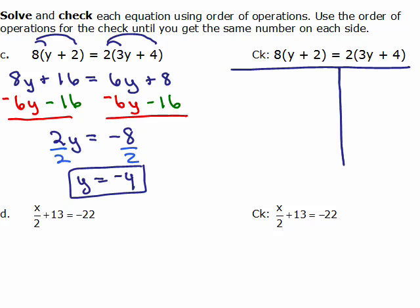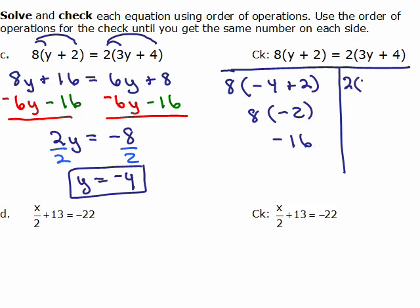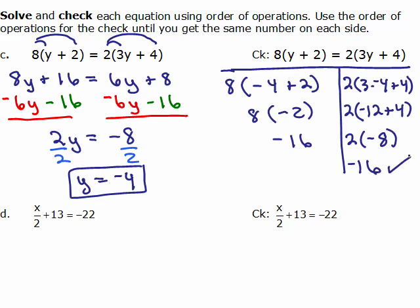Now we have to check it. When you check it, you have to check it in the original — no distributive property — you are going to just plug in negative 4 for y and do order of operations: negative 4 plus 2. Inside the parenthesis, that's negative 2, and 8 times negative 2 is negative 16. Same thing on the right: we plug in negative 4, so 3 times negative 4 plus 4 — doing order of operations inside the parenthesis, that's negative 12 plus 4, so 2 times negative 8, which is negative 16. Both sides match, same answer.